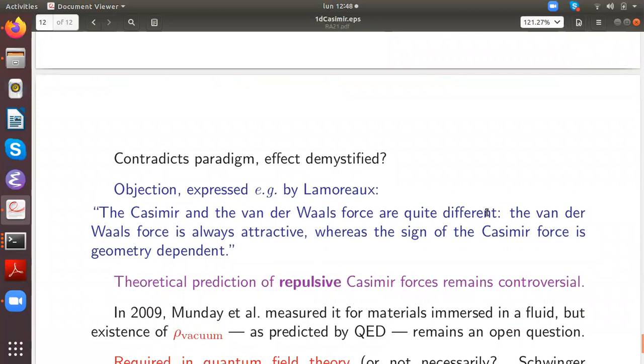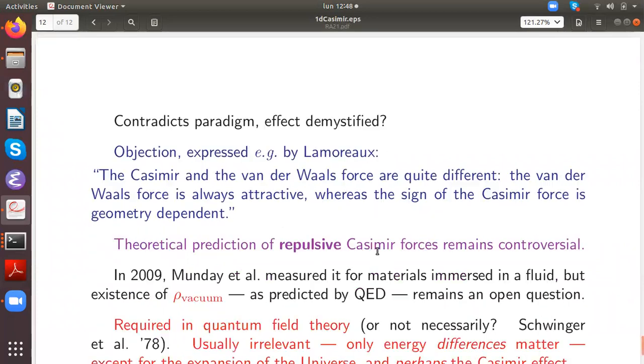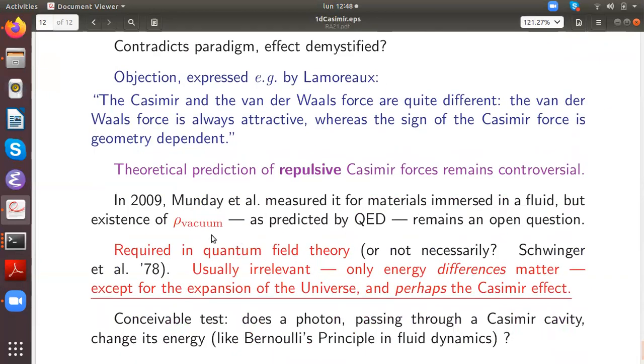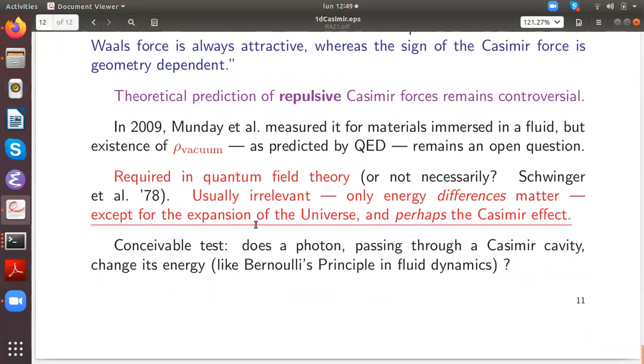So does this demystify the effect? Not everybody agrees with that. For instance, Lamoreaux wrote the Casimir and the van der Waals force are quite different. The van der Waals force is always attractive, whereas the sign of the Casimir force is geometry dependent. There are many papers who predict a repulsive Casimir force, but this depends on subtleties in the assumptions, so this remains controversial in the literature. In 2009, such a repulsive force was actually measured, but this was for materials immersed in a fluid. So the existence of a vacuum energy density as predicted by QED is still an open question.